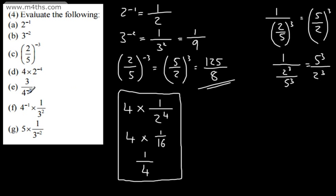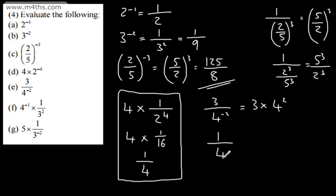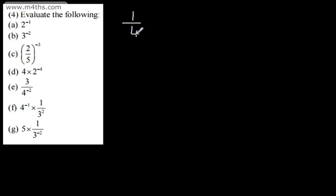If we look at the next one, we've got 3 over 4 to the negative 2. Instead of writing 3 over 4 to the negative 2, we could write this as 3 times 4 to the positive 2. 1 over 4 to the negative 2 is the same as saying 4 to the positive 2 over 1, which of course gives me 16. 3 times 16 is going to give 48. The next one: 4 to the negative 1 is 1 over 4, and we're going to multiply this by 1 over 3 squared. 1 over 3 squared is 9. So this is going to give us 1 over 36. All I've done is employed the rule a to the negative m is 1 over a to the m, and then simplified.